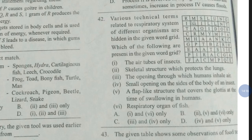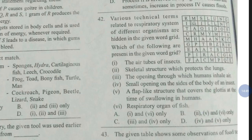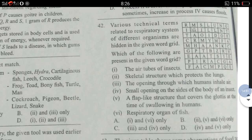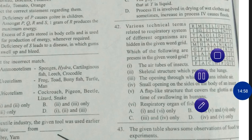Question number 42. Various technical terms related to the respiratory system of different organisms are hidden in the given word grid. Which of the following are present in the given word grid? First: the air tubes of insects. Second: skeletal structure which protects the lungs. Third: the opening through which humans inhale air. Fourth: small opening on the sides of the body of an insect. Fifth: a flap-like structure that covers the glottis at the time of swallowing in humans. Sixth: respiratory organ of fish. The correct answer is option number A — first and sixth only. The air tubes of insects is trachea, and the respiratory organ of fish is gill.